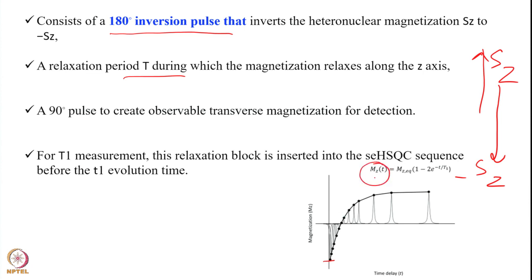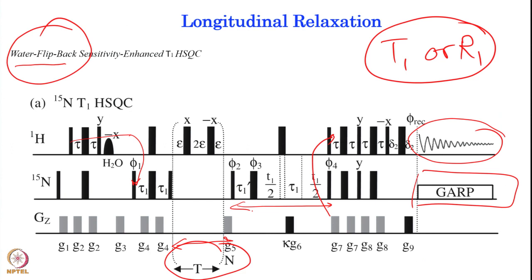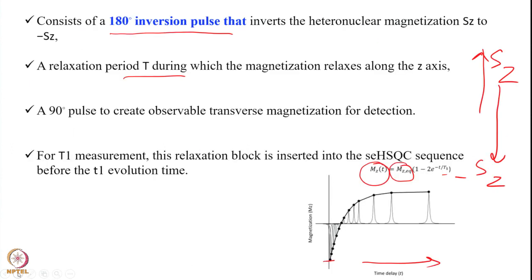The equation is: MZ(T) = MZ(eq) × (1 − 2·e^(−T/T1)). The T is the time delay we are giving and T1 is the relaxation rate constant. A 90-degree pulse then creates the observable transverse magnetization for detection, and this relaxation block is inserted into the sensitivity-enhanced HSQC experiment.